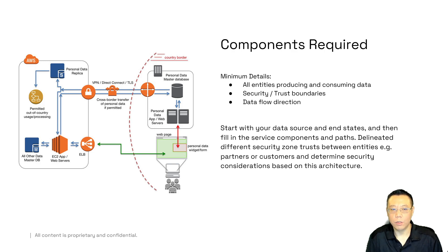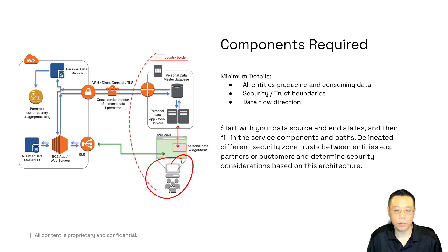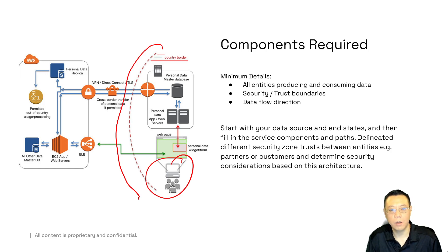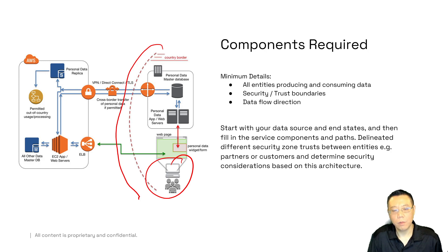When you threat model something, you need to understand where the data flows start and stop. Make sure that you work backwards from the perspective of the end user and the data producers and consumers of everything. Map out the bi-directional or single-directional areas as well as security trust zones. If you see that you're doing a different security zone of trust — leaving the AWS VPC environment to perhaps a lower or higher trust level — you have to make that determination when you make these diagrams. The more details you can provide to the security architecture team, the better they can help you with your risk analysis.